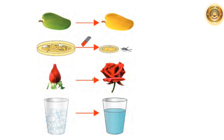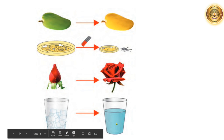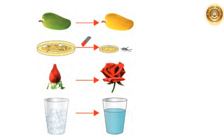Now observe this picture — which changes shown are temporary and which are permanent? For example, a raw mango becoming a ripe mango — is it a temporary change or a permanent change? It is a permanent change. Similarly, a rosebud blooming into a flower is again a permanent change. In which of these changes did the original matter undergo a change? In the case of a raw mango becoming a ripe mango, the original substance underwent a change. Whereas when ice is changed into water, the original substance is not undergoing any change — the original matter remains unchanged.